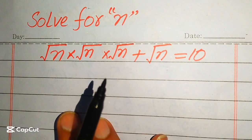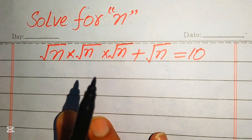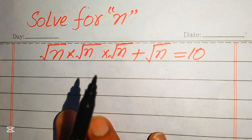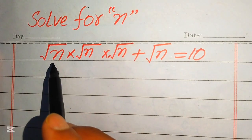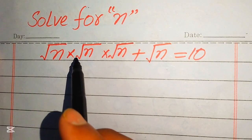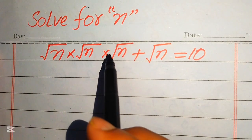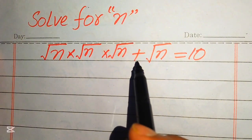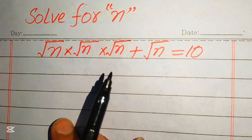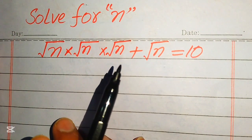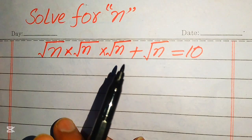Hello everyone. Today I want to show you how to solve this problem for the values of n, if we have square root of n multiplied by square root of n multiplied by square root of n, plus square root of n, equals 10, and we solve this problem for the values of n.